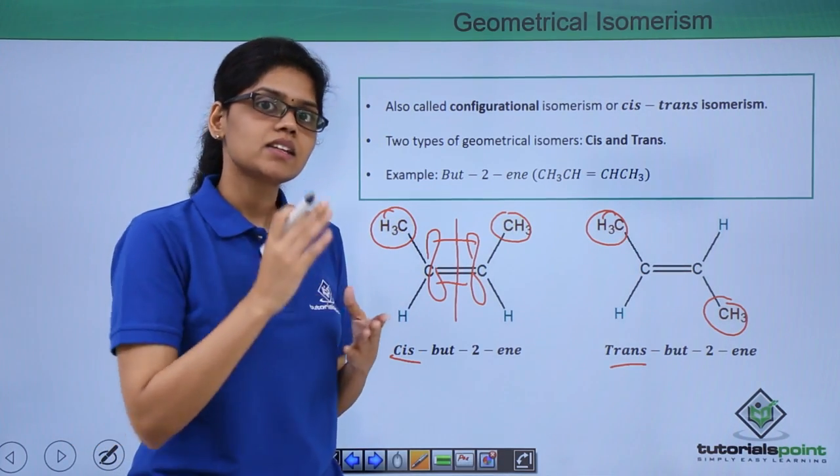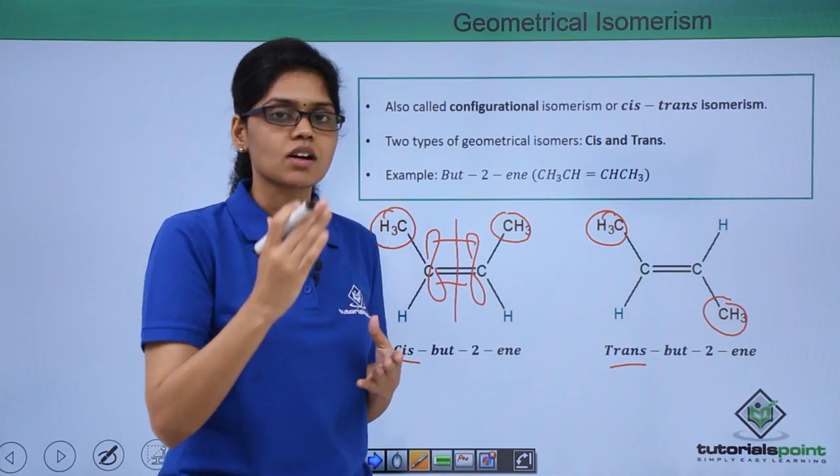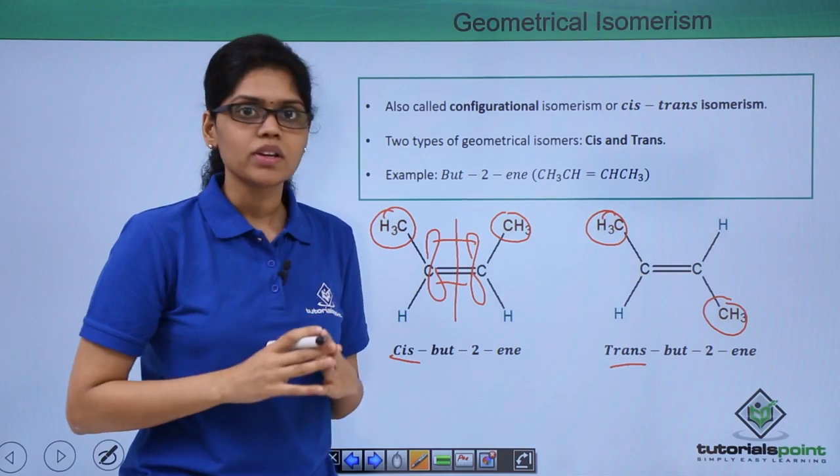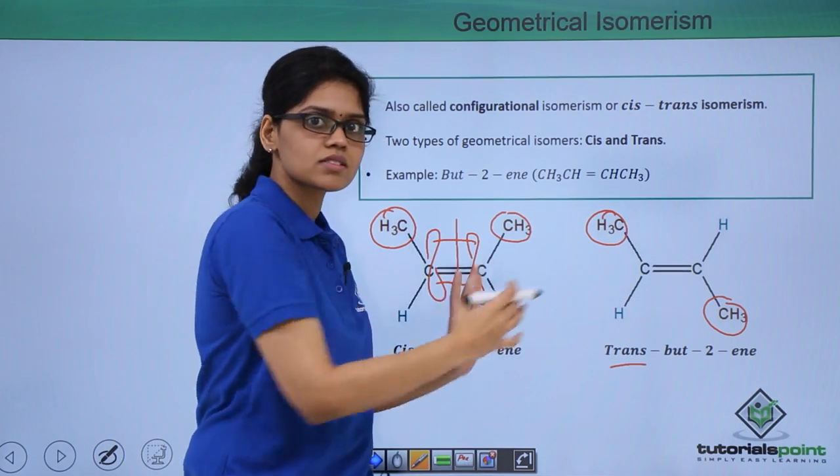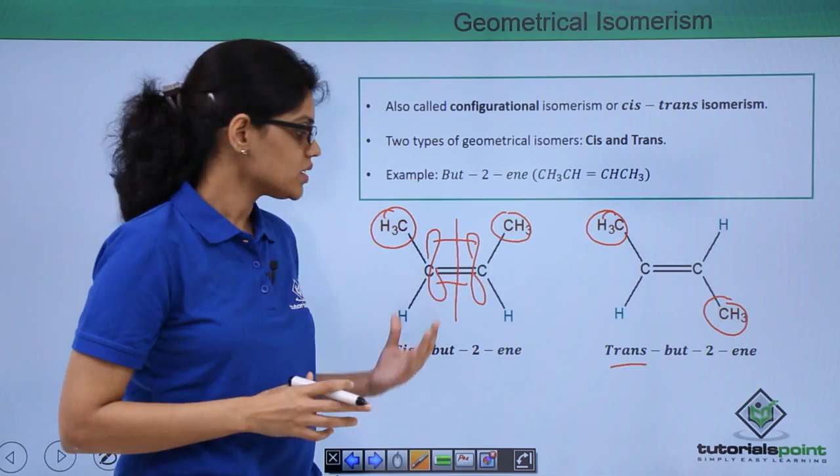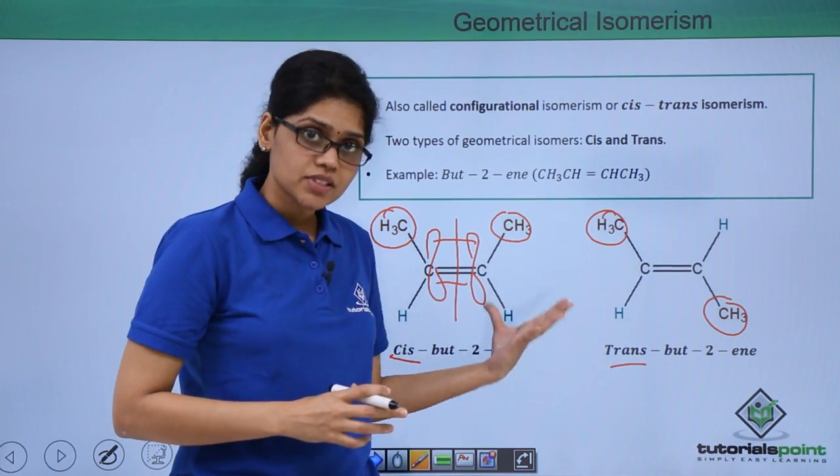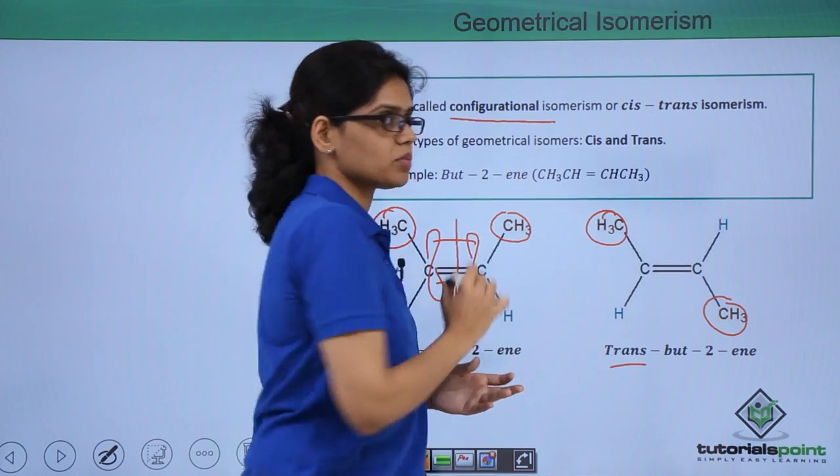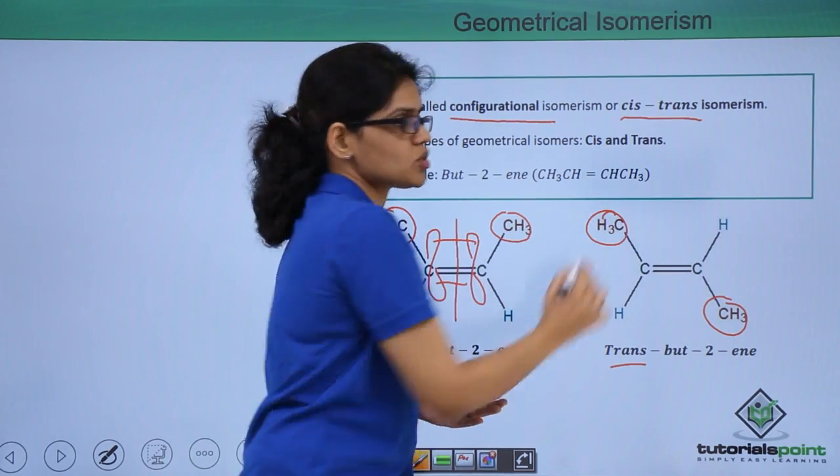Although we have seen that this interconversion between cis and trans is possible for certain compounds at very high temperature, under normal conditions we have two distinct structures and thus two distinct geometrical isomers which are called cis and trans. For the same reason geometrical isomerism is also called configurational isomerism or cis-trans isomerism.